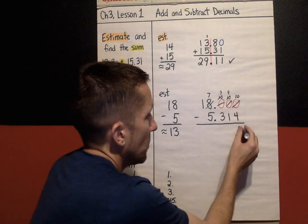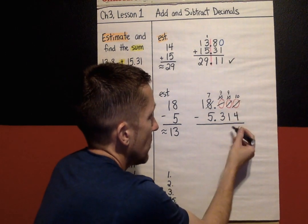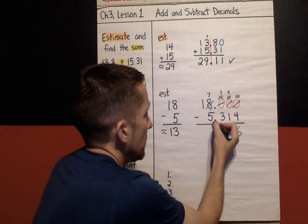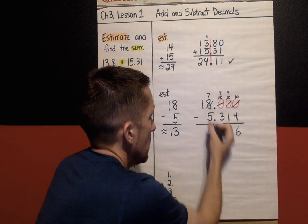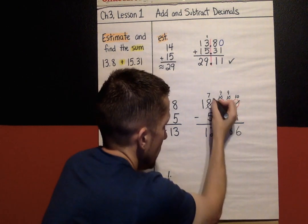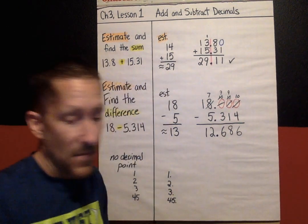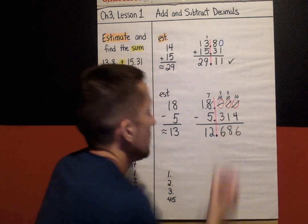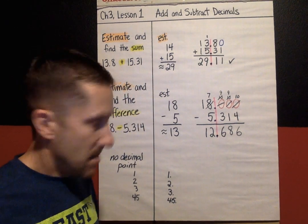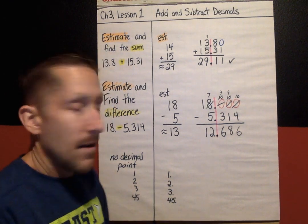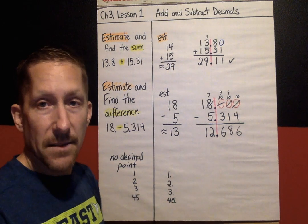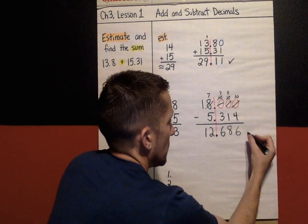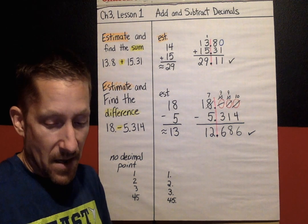So now I can subtract. 10 take away 4 is 6, 9 take away 1 is 8, 9 take away 3 is 6, 7 take away 5 is 2, 1 take away nothing is 1, and decimal point comes straight down. Let's highlight that. Here's my decimal point dropping straight down in my answer. And I get 12.686. Now, let's compare that back to our estimate. Estimate was about 13. Is this about 13? You bet it is. So, it's my estimate.